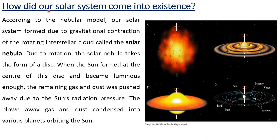Let us discuss how our solar system came into existence. According to the nebular model, our solar system formed due to the gravitational contraction of the rotating interstellar cloud called the solar nebula. Due to rotation, the solar nebula takes the form of a disk, as you can see here.